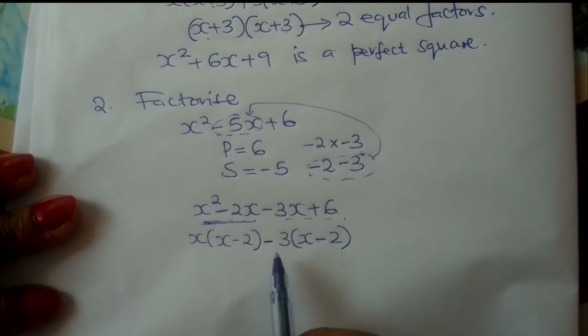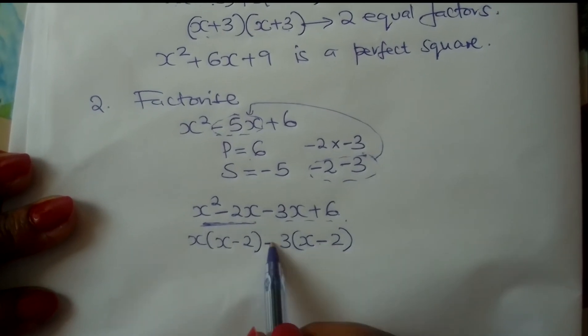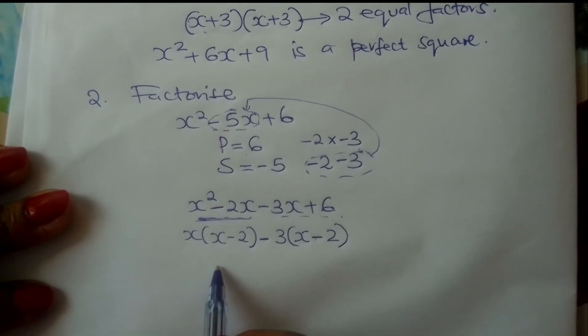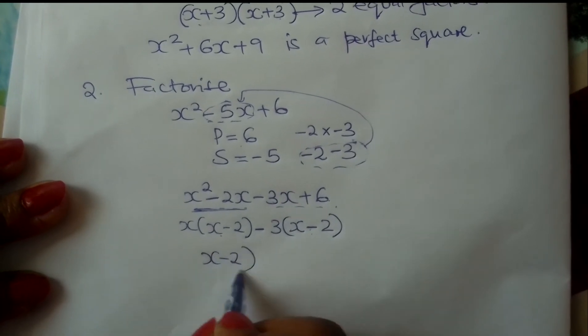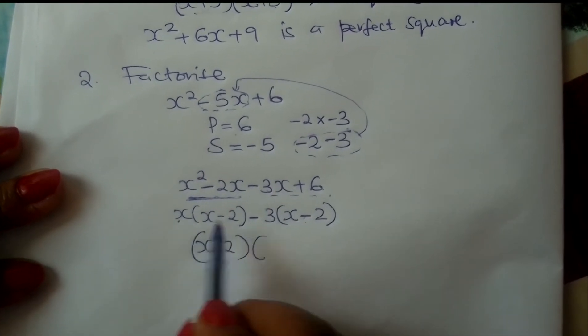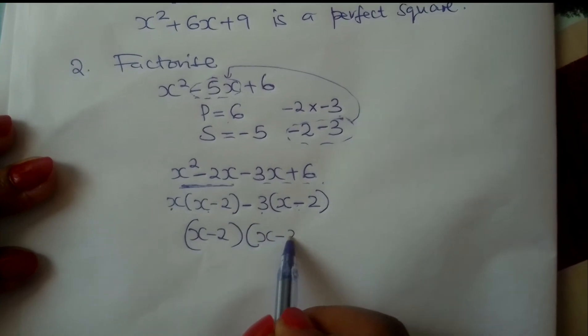This becomes minus, not plus, so that if you removed the brackets, minus times minus would give you plus. And therefore this is a common bracket. Again, factor it out, and you will be left with x - 3 in the second bracket.